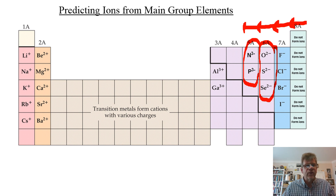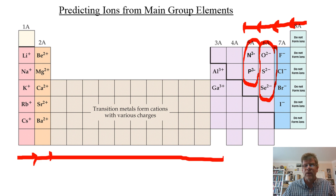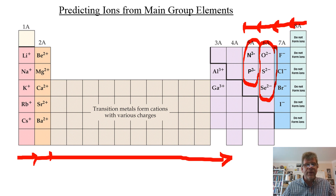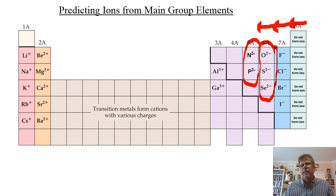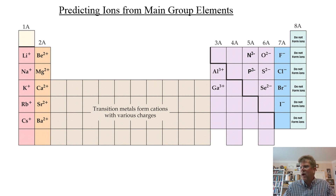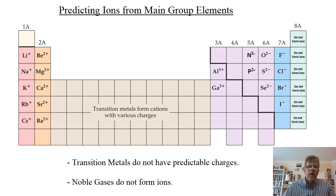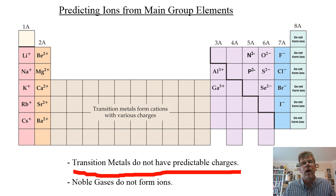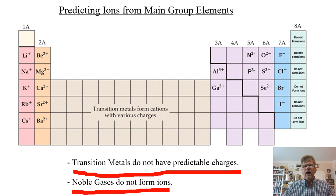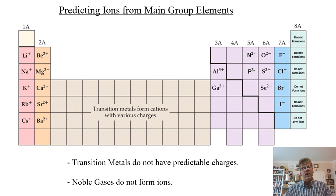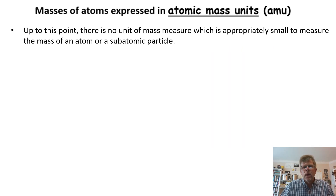The pattern is clear: going from right to left — zero for noble gases, −1 for halogens, −2 for the oxygen/sulfur column, −3 for the nitrogen/phosphorus column. Going from left to right it's +1, +2, skipping the transition metals, +3. This is not rote memorization — it follows a pattern. Transition elements do not have predictable charges in our model, and noble gases don't form ions. The next unit of study will explain why.